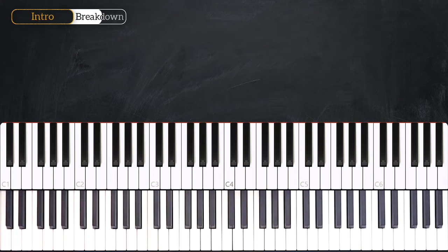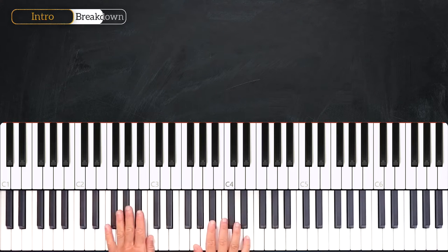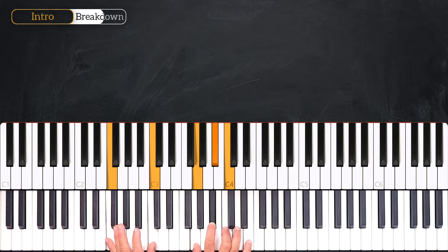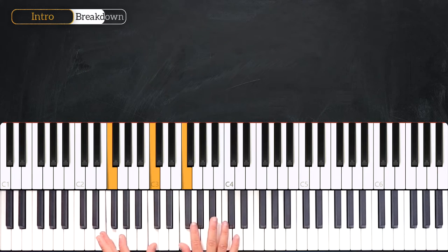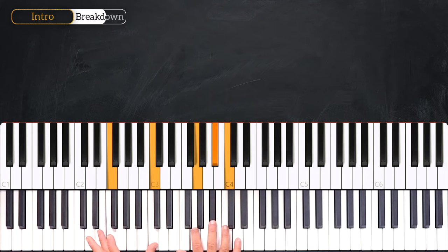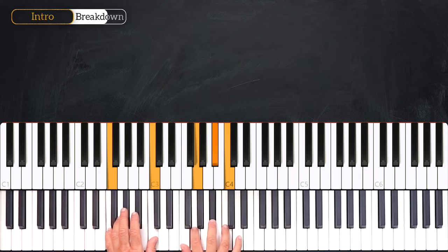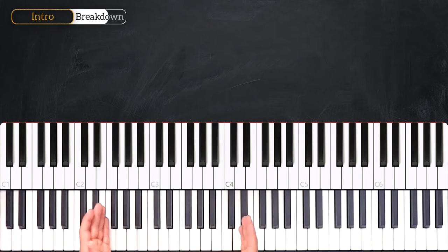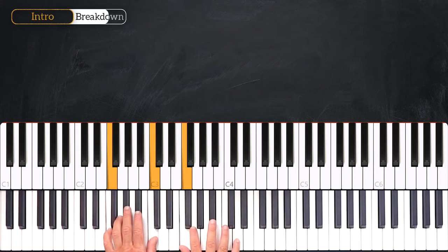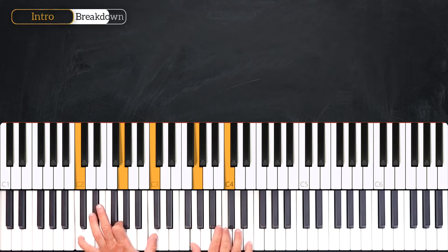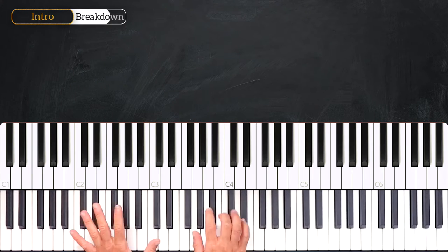Let's play it again from the A-flat major 7 one last time. From here we're going to play the F minor 11 and we'll play an F at the top notes of the chord. We'll finish by playing F, C again on the left hand. Let's play this introduction part once again.